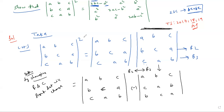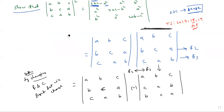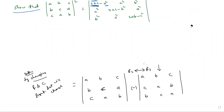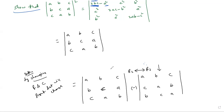So the second step is to change R2 and R3, giving us the RHS direction. When interchanging rows or columns, the determinant sign changes. Simple point: the sign of the determinant will change when you interchange any two rows or any two columns.